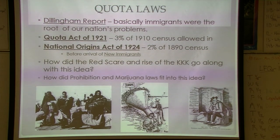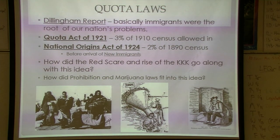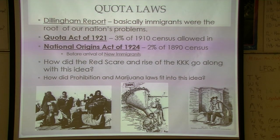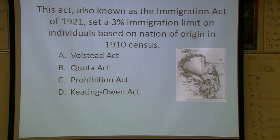For marijuana laws passed in the 1920s outlawing marijuana, the two main groups associated with its use were Mexican Americans and African Americans in cities. So a lot of these laws were focused on specific groups.